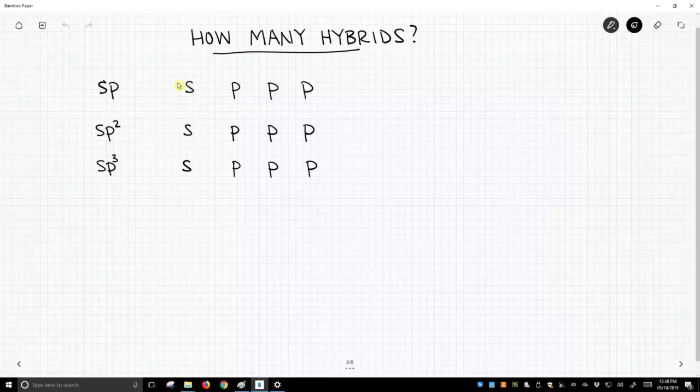For sp hybridization, we take the s and one of the p's and we mix these together and we get two sp hybrids plus our leftover p's.